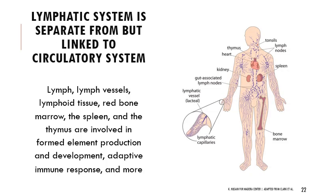The lymphatic system is separate from but linked to the circulatory system. While the circulatory system moves blood through the body, the lymphatic system drains interstitial fluid floating between body cells and circulates it back to the heart. The lymphatic vessels eventually connect with the circulatory system and drain into the heart through the vena cava. These components are important for forming blood elements and for adaptive immune responses.